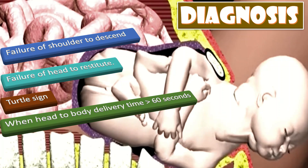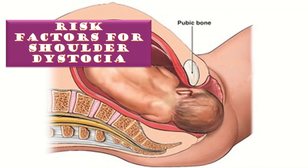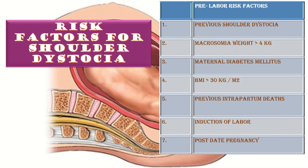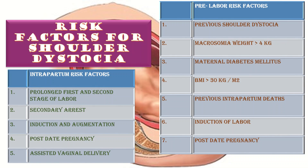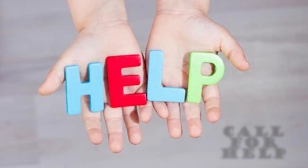The pre-labor risk factors include: previous shoulder dystocia, macrosomia with a weight of more than 4 kg, maternal diabetes mellitus, BMI more than 30 kg/m², previous intrapartum deaths, induction of labor, and post-date pregnancy. The intrapartum risk factors include: prolonged first and second stage of labor, secondary arrest, induction and augmentation, post-date pregnancy, and assisted vaginal delivery.